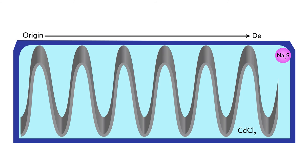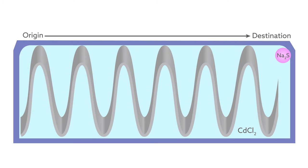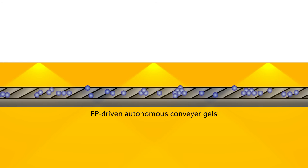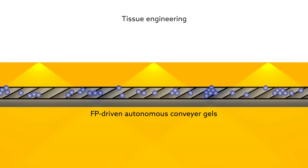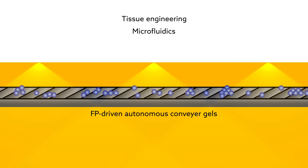This successful synthesis shows that FP conveyor gels can be used to transport chemical cargo to very specific locations, providing researchers with very fine control over chemical reactions. In the future, FP-driven autonomous conveyor gels may also see use in such fields as tissue engineering, microfluidics, and biomedicine.